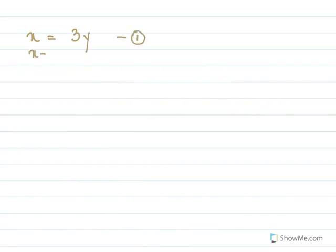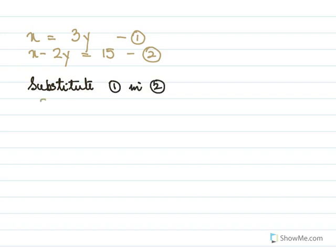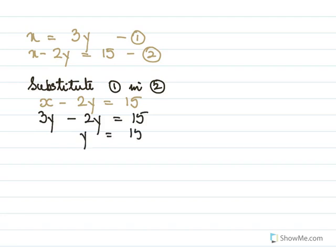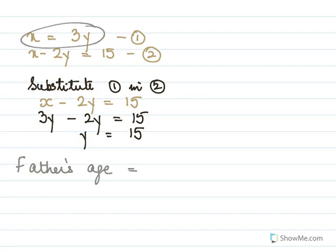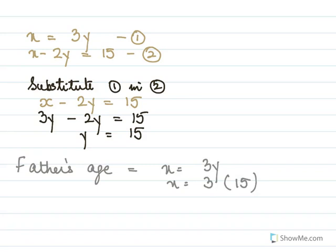After five years the father's age will be twice that of his two children, so x plus 5 equals 2 times y plus 10, giving x plus 5 equals 2y plus 20, so x minus 2y equals 15. This is equation two. Substituting equation one into two: 3y minus 2y equals 15, so y equals 15. Therefore x equals 3 times 15, so x equals 45. The present age of the father equals 45 years.